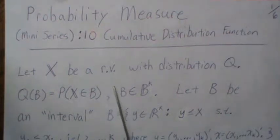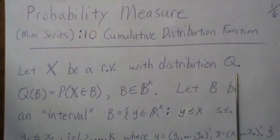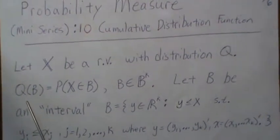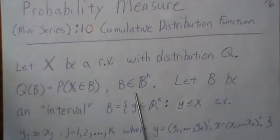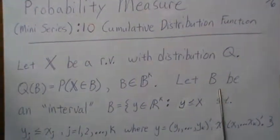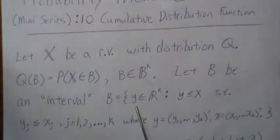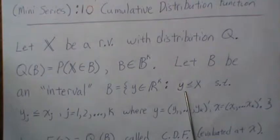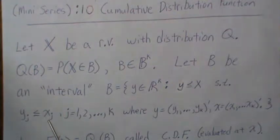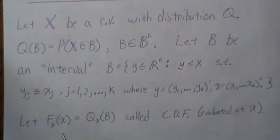Let x be a random vector with a distribution q. That means it has a probability density function — it could be discrete or continuous — essentially saying the probability that x is in some set B, where B is the k-dimensional Borel sigma field. But let's let B be an interval, such that we want all y less than or equal to x for a given x, meaning each component of y has to be less than or equal to each component of x, where these are k-dimensional vectors. Then we let F of x equal this q of x of B.